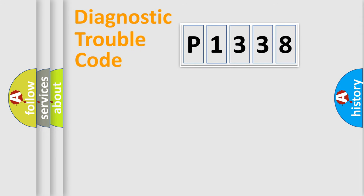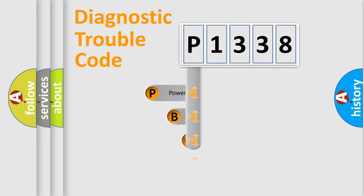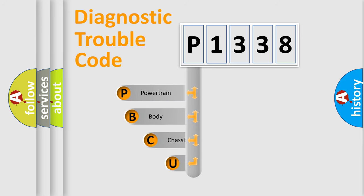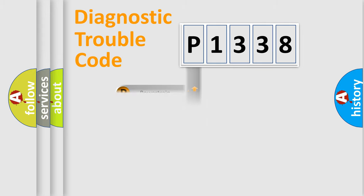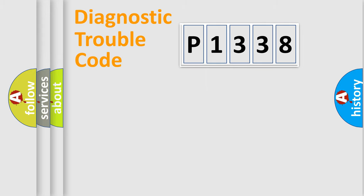First, let's look at the history of diagnostic fault code composition according to the OBD2 protocol, which is unified for all automakers since 2000. We divide the electric system of the automobile into four basic units: Powertrain, Body, Chassis, and Network.